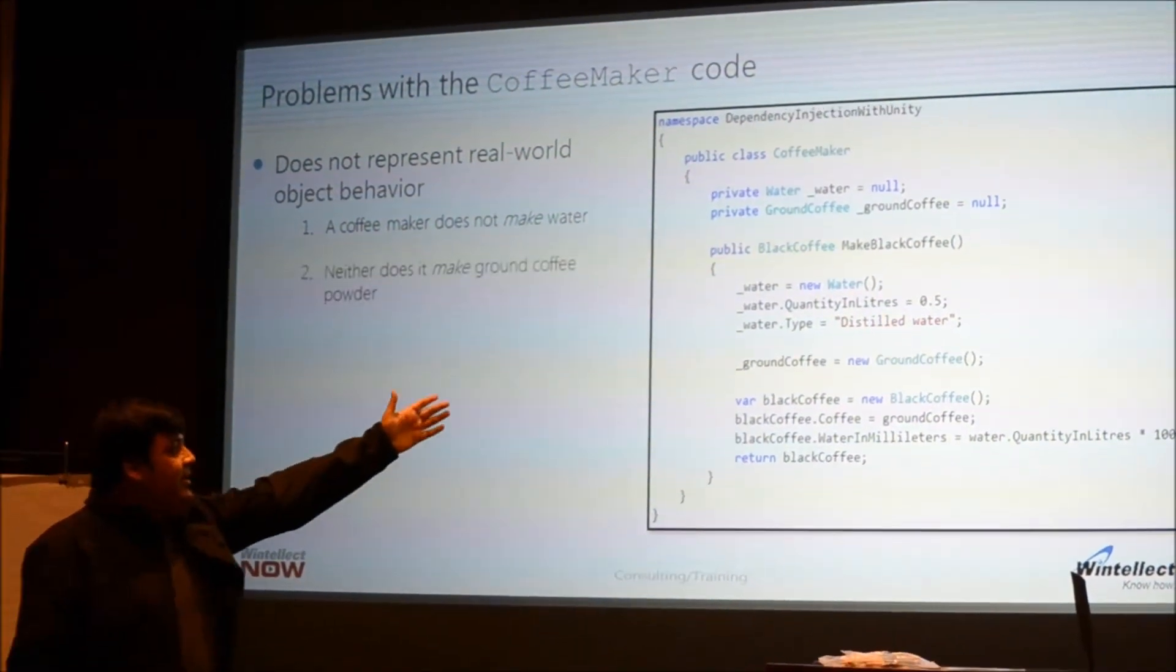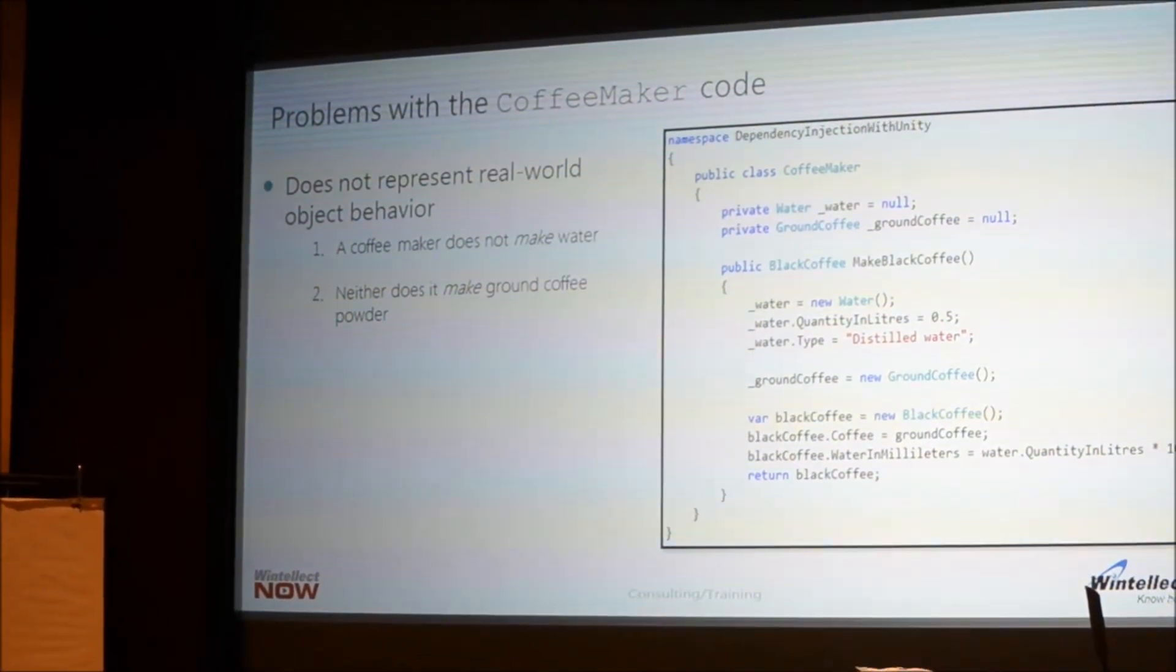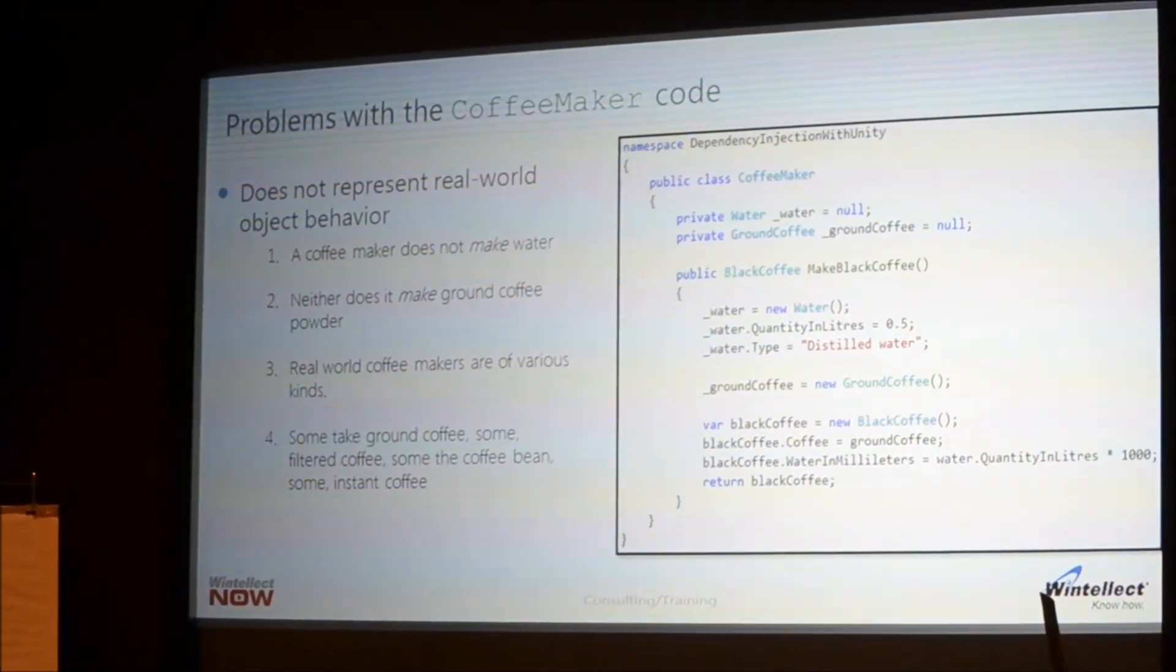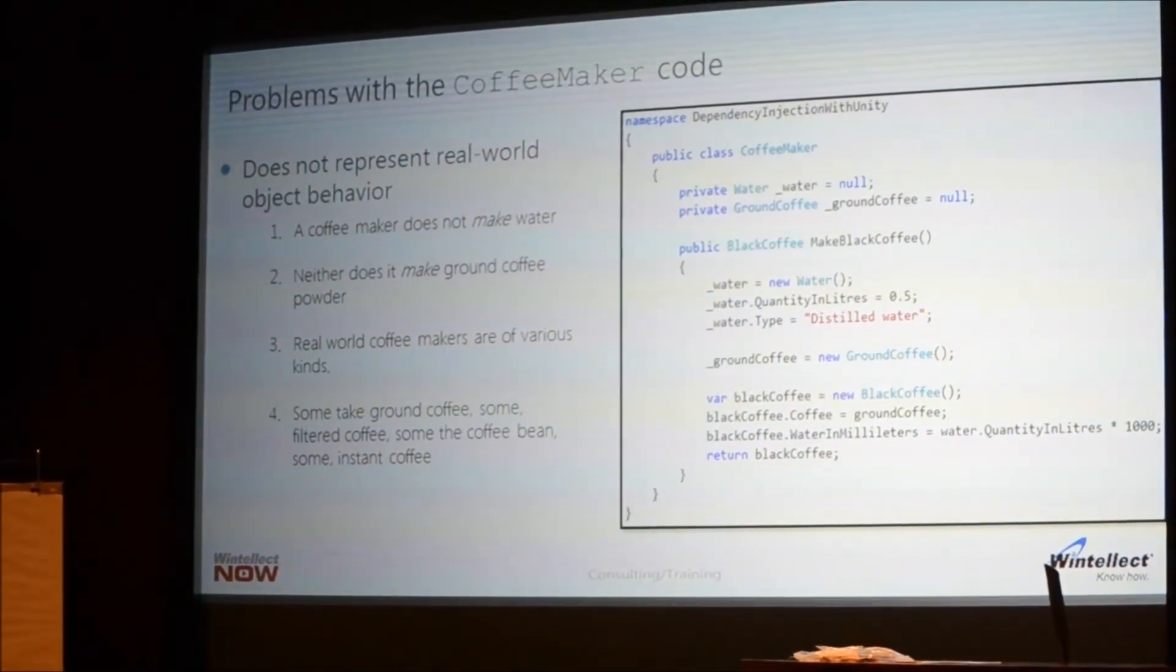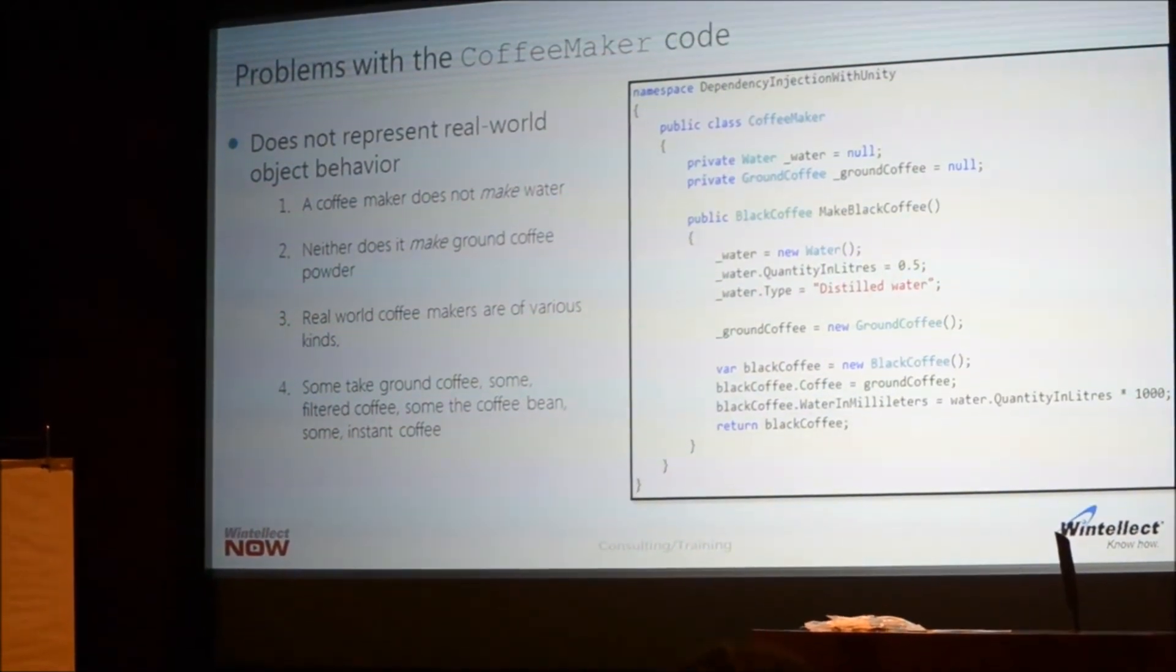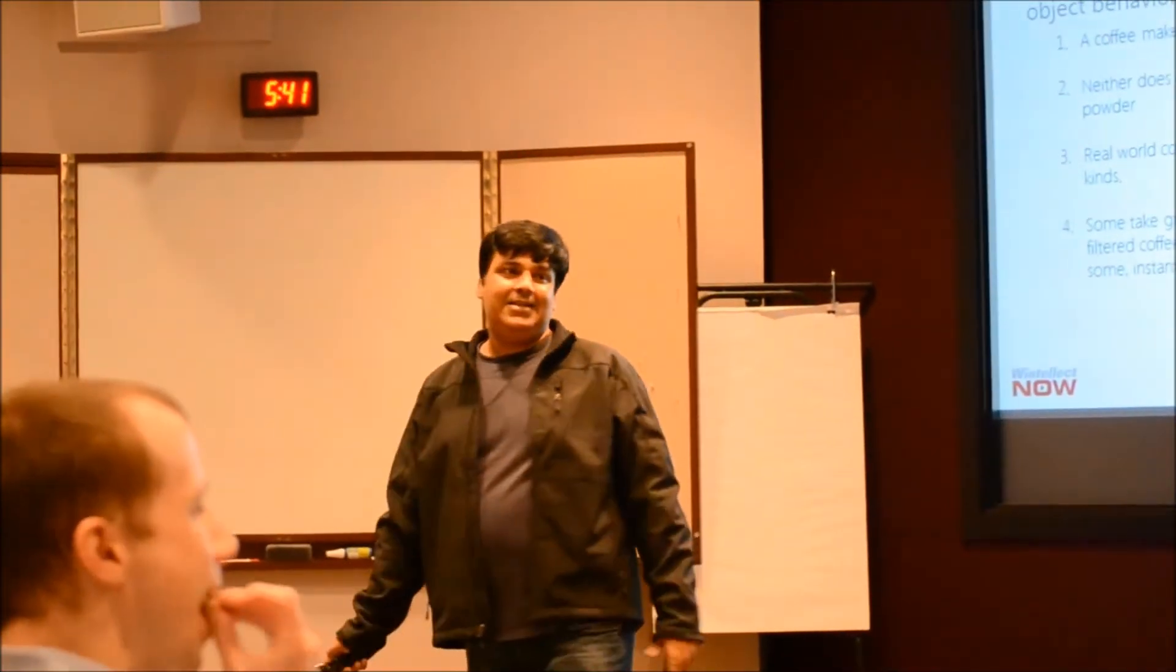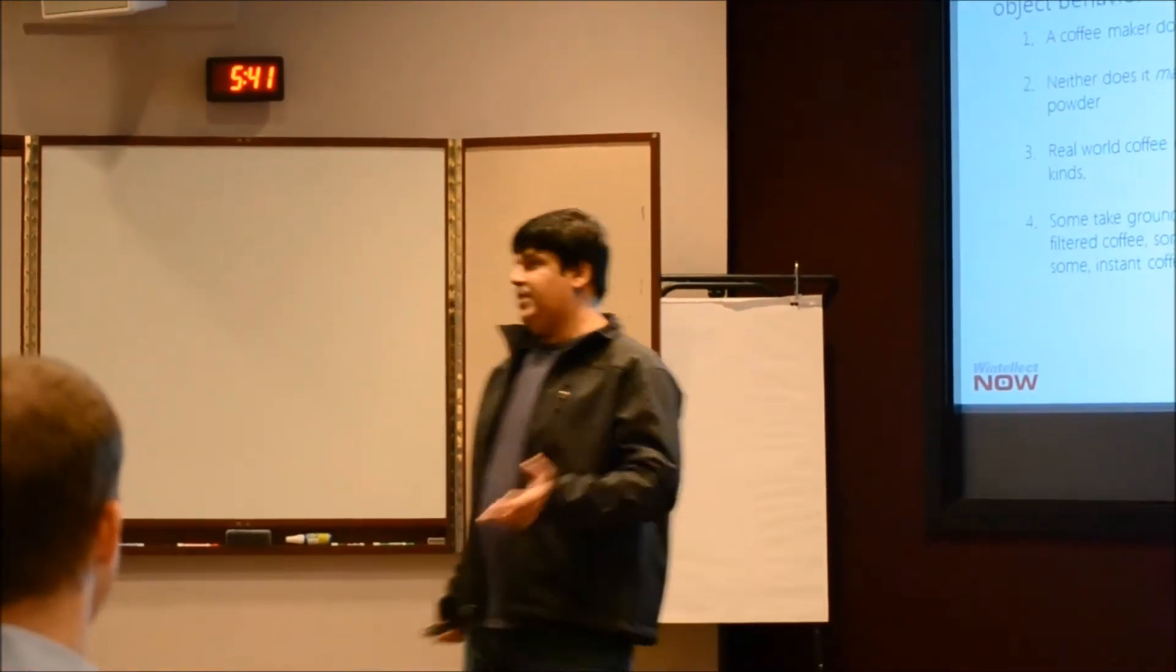The second thing, and the same thing, it doesn't make ground coffee. There's no coffee maker in the world that creates ground coffee. Another thing is that most coffee makers in the real world accept different kinds of coffee powders. Or there could be different kinds of coffee makers that accept different kinds of coffee powders. Some accept filtered coffee, some ground coffee and some instant coffee. And maybe there is a coffee maker somewhere in the world that accepts the coffee bean and grinds it and has a grinder inside it that powders the coffee and then makes coffee out.